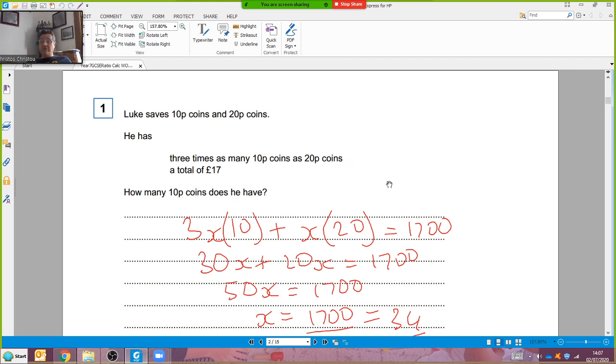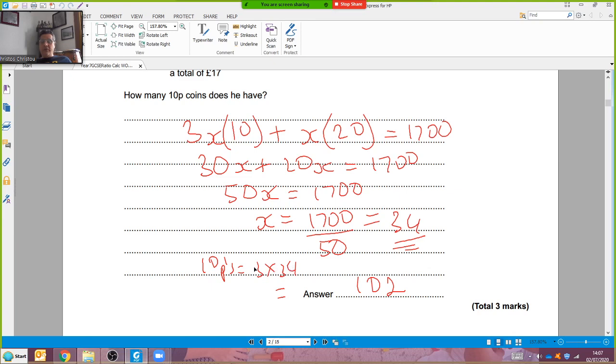I'm told that I've got three times as many 10p coins as 20p's, and they want to know how many 10p's I've got. Well, I've got three lots of this portion of coins, which is 3 times 34, which is 102. That's how my brain saw it.